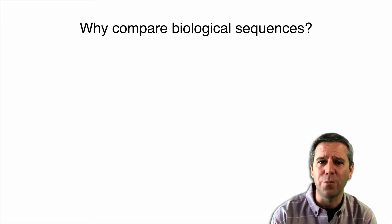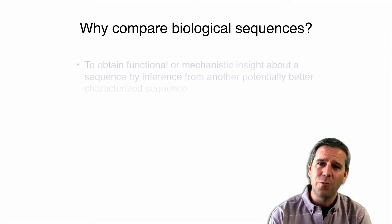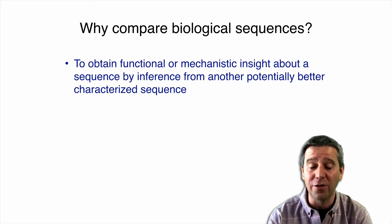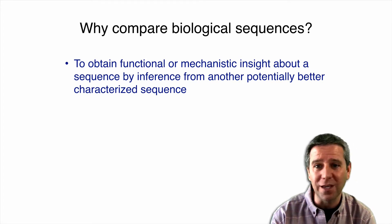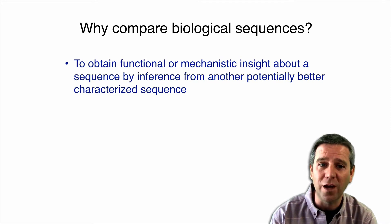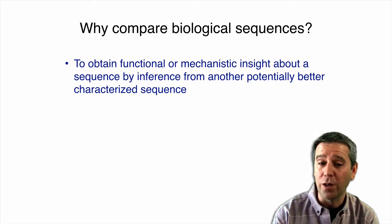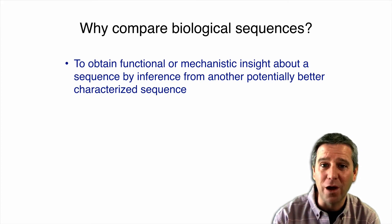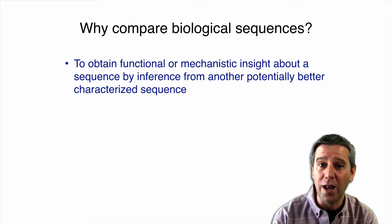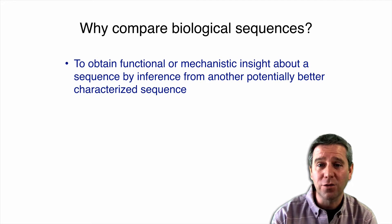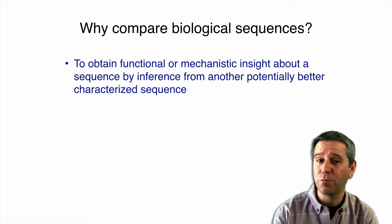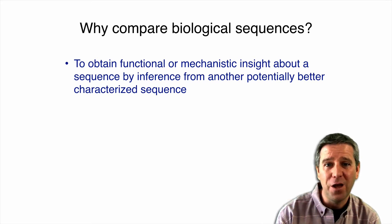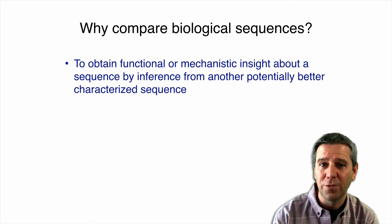So why do we want to compare sequences in this way? We want to obtain functional or mechanistic insight about a sequence by inference from another sequence that's potentially better characterized. For example, when we start with some unknown sequence from the lab or a sequencing run and ask what could this be doing — in a disease we're interested in, or why is this drug affecting this protein — we can search a database of well-annotated sequences, find a match, and say this is similar to that sequence and potentially doing similar functions. We can share annotation across sequence space by finding relatives using these methods.